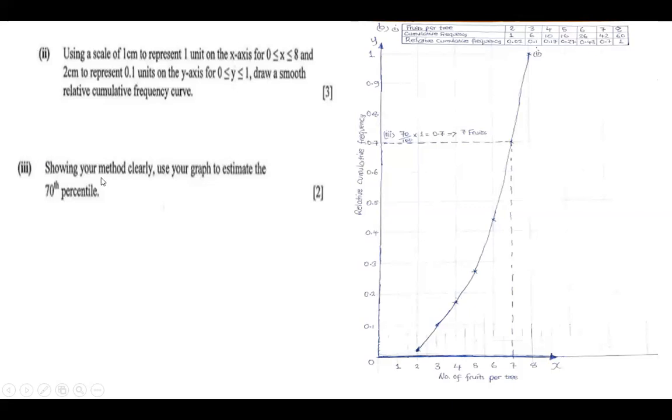Then part 3: showing your method clearly, use your graph to estimate the 70th percentile. Now 70th percentile is simply 70 over 100 times the maximum value in the y-axis, in the relative cumulative frequency, which is 1. So you multiply by 1, which gives you 0.7. Then you go at the 0.7 along the y-axis and draw a line until you meet the curve. Where that line, the 70th percentile, meets the curve, you draw a vertical line downwards until it meets the x-axis or the number of fruits per tree. Where it meets the number of fruits per tree, you read that number, which is 7. So 7 fruits is the 70th percentile.